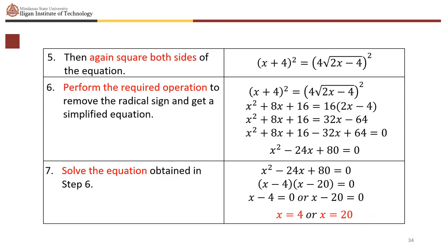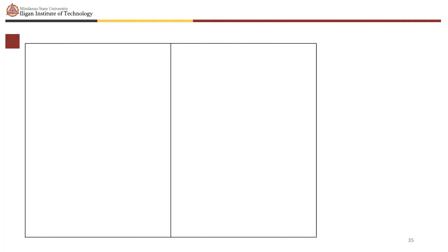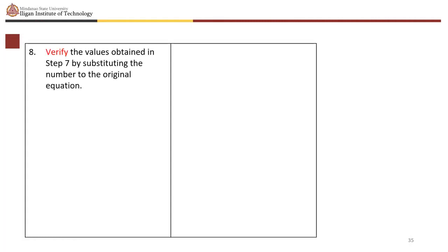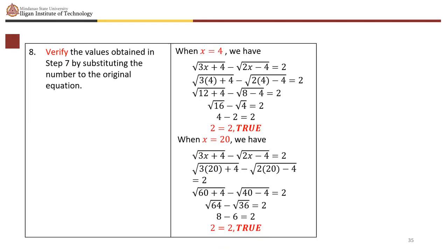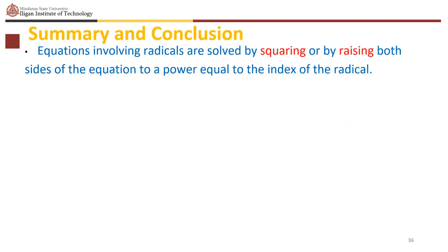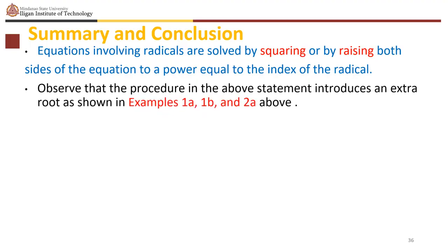Verify both values. Both x equals 4 and x equals 20 satisfy the original equation. Equations involving radicals are solved by raising both sides to a power equal to the index of the radical. This procedure can introduce extraneous roots as shown in the examples.